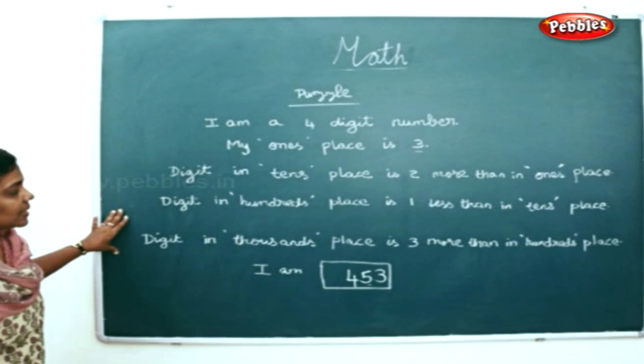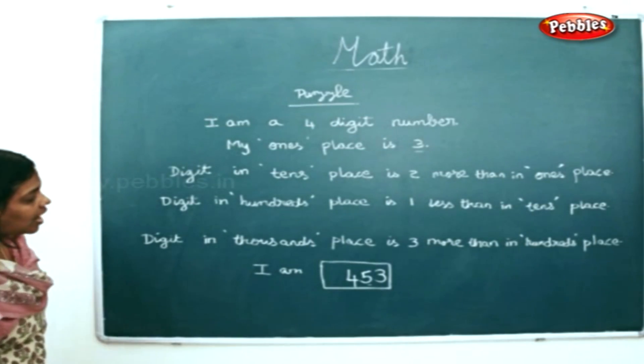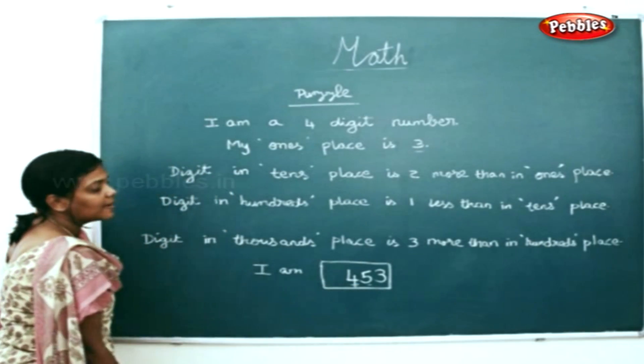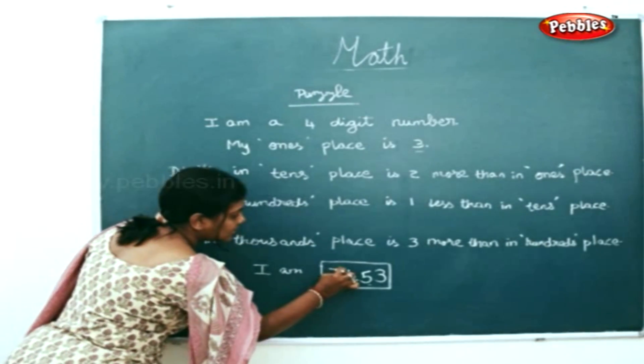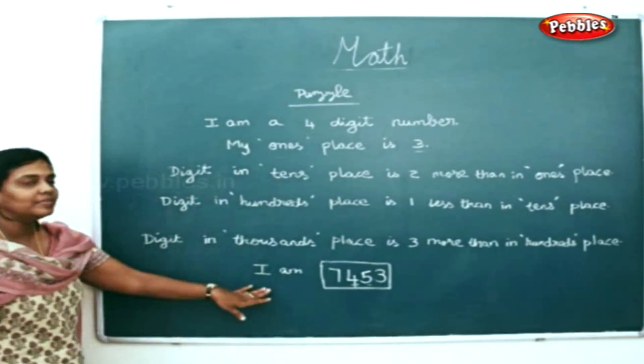And in the thousands place, it's three times more than the hundreds place. This is your hundreds place. Three times more than four is seven. So I form this number.